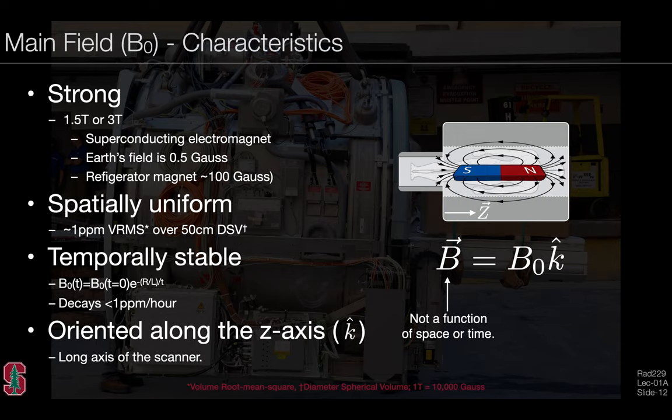The B0, or main field, has several important characteristics. First, it's a very strong magnetic field—1.5 Tesla or 3 Tesla for most clinical imaging systems. It is a superconducting electromagnet. In reference to the Earth's field, which is about half a gauss, or a refrigerator magnet at about 100 gauss, this is an extremely strong electromagnetic field. It is spatially uniform, varying by only about one part per million RMS over a 50 centimeter diameter sphere. It's also temporally stable, decaying very little as a function of time, perhaps one part per million per hour. It's oriented along the Z axis, the long axis of the scanner, generally along which the patient's head and foot is oriented.